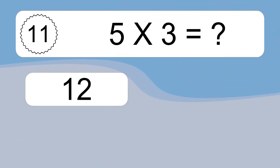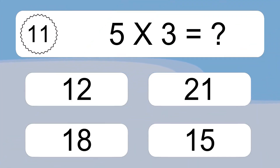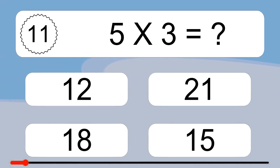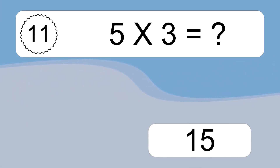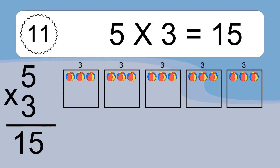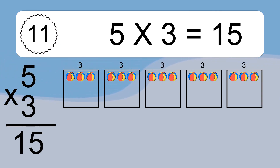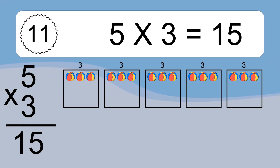5 times 3 equals what? 5 times 3 equals 15. We have 5 boxes and each box has 3 colorful balls inside. If you count all the balls in all the boxes together, you will have 5 times 3 balls.